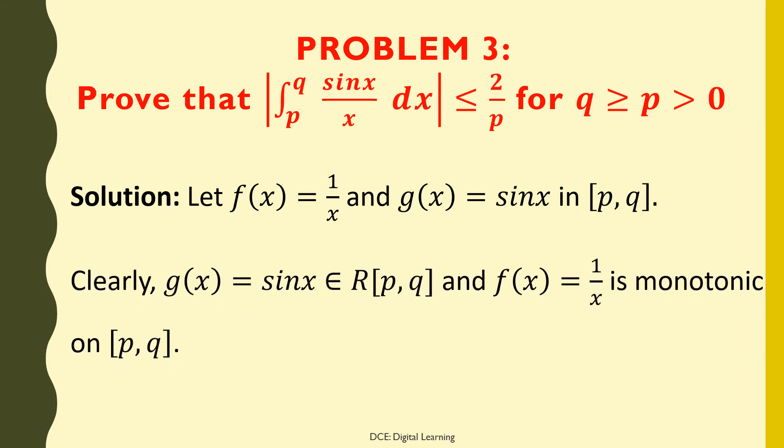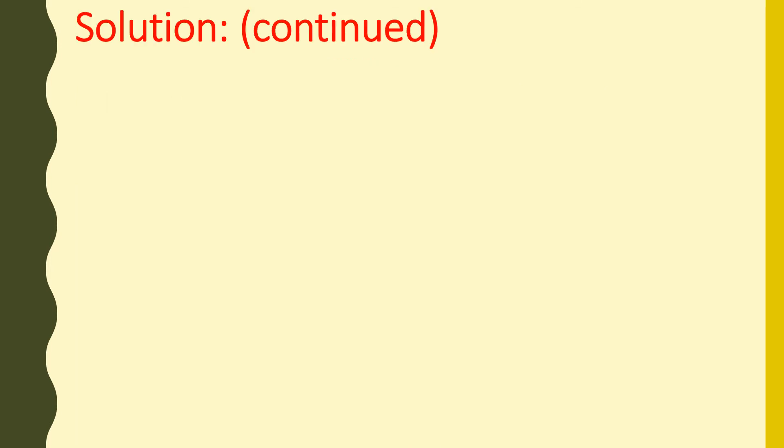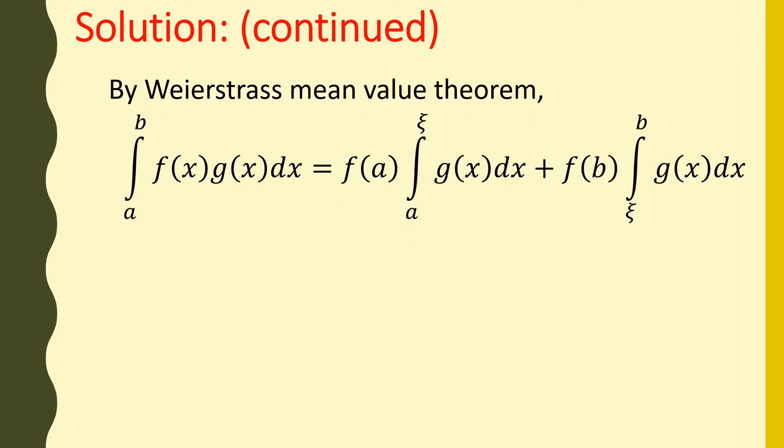Clearly, g(x) = sin(x) belongs to Riemann integrable functions on [p, q], and f(x) = 1/x is monotonic on [p, q]. By the Weierstrass mean value theorem, the integral of f(x)g(x) dx from a to b equals f(a) times the integral of g(x) dx from a to η, plus f(b) times the integral of g(x) dx from η to b.